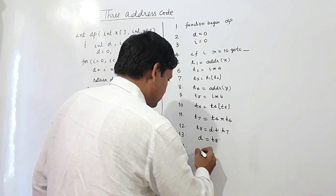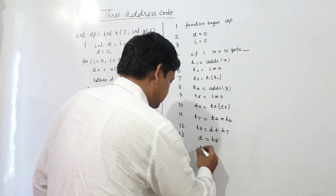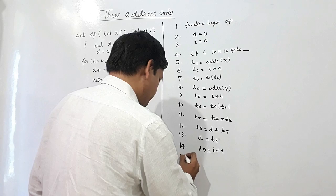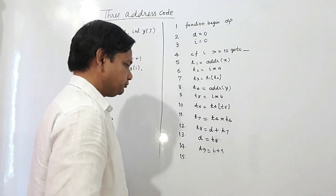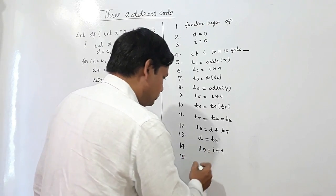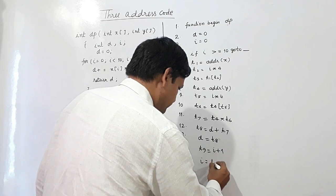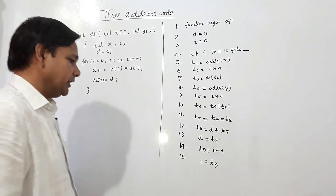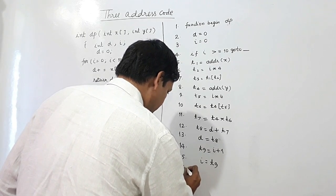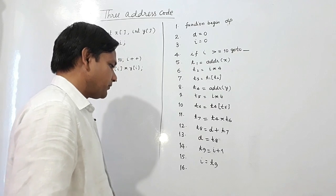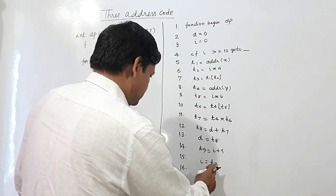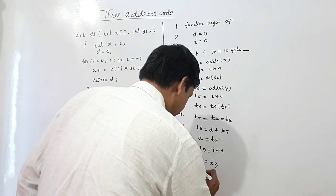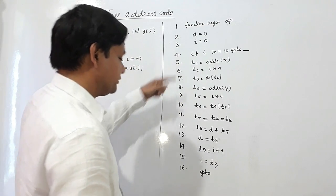Now what is happening? Value of i will be increased. So line number 14, t9 will be equal to i plus 1. Line 15, this t9 will be assigned to i. At 16, i equal to t9, then it will jump, go to that condition 4.